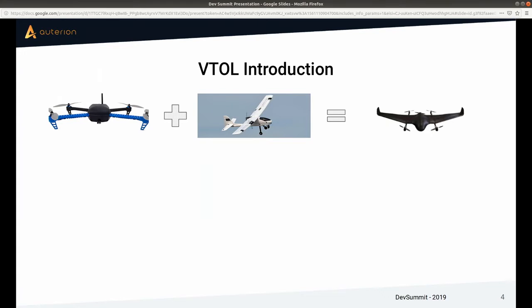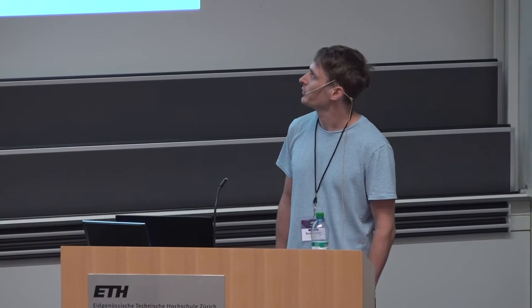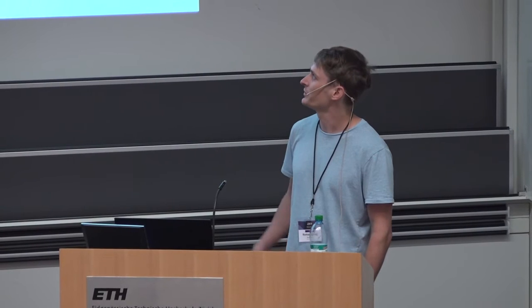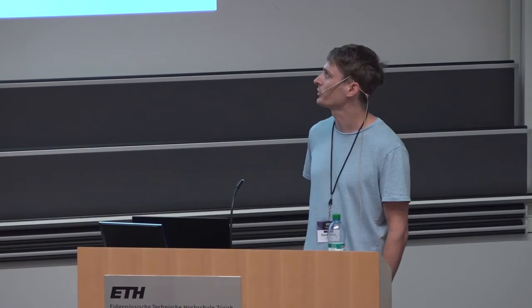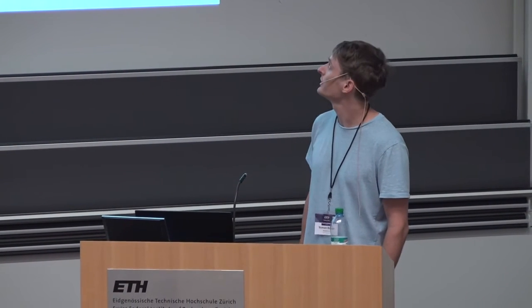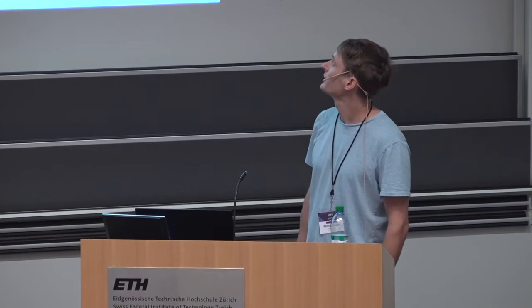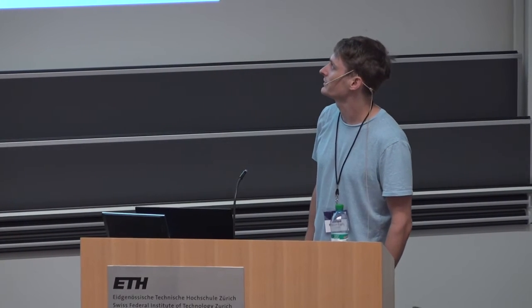What does VTOL actually mean? It stands for vertical takeoff and landing, as you better know. And what it really is, in the easiest case, is just a plane with a quadcopter attached to it, so that you have something that looks like a plane that can hover.